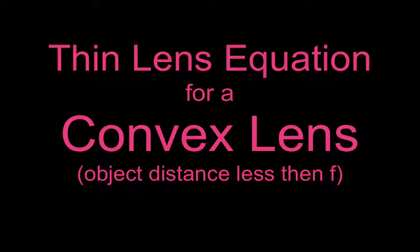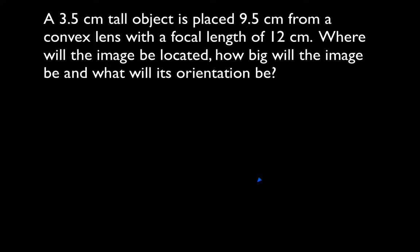In today's video, I'm going to go over how to use the thin lens equation for the convex lens so that we can calculate the image distance, the image size, and the image orientation. This is the case where the object is less than f, where the object distance is less than f from the lens. Now you remember we had three cases: when the object distance is greater than f we get a real image, when the object distance is at f then we don't get an image, and when the object is inside of f we get a virtual image. So let's go through and see what we got with our problem here.